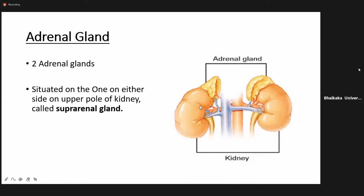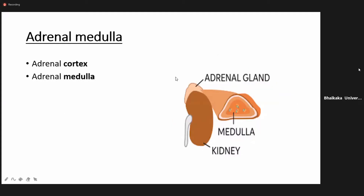This image shows the kidney with an adrenal gland on the upper pole, which is why it is called the suprarenal gland — 'supra' means superior, 'renal' refers to the kidney. It is situated on the upper pole of the kidney on both sides. Looking at the cross section of the adrenal gland, it is divided into two parts: the outer adrenal cortex and the inner adrenal medulla. Today's topic is the hormones secreted from the adrenal medulla.